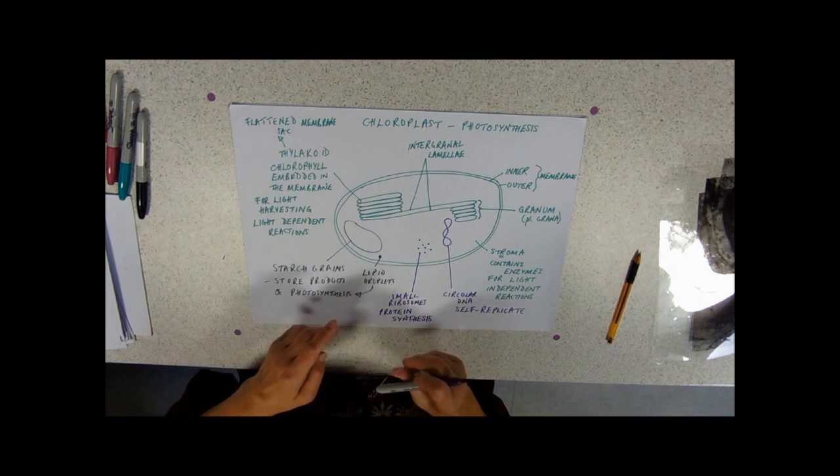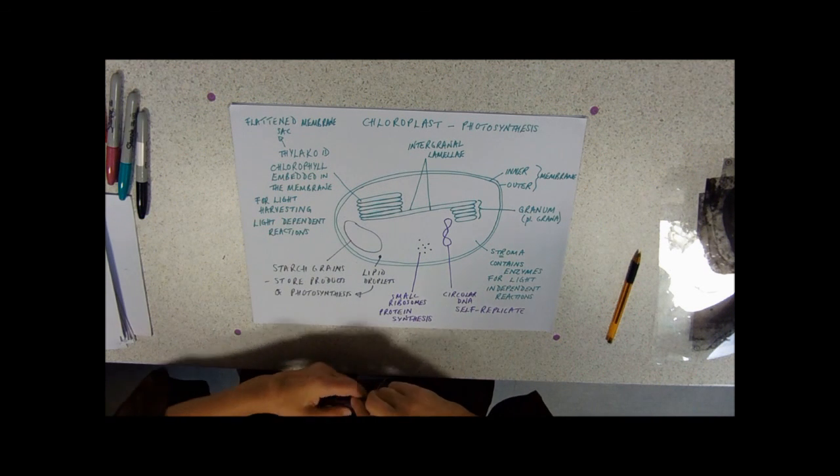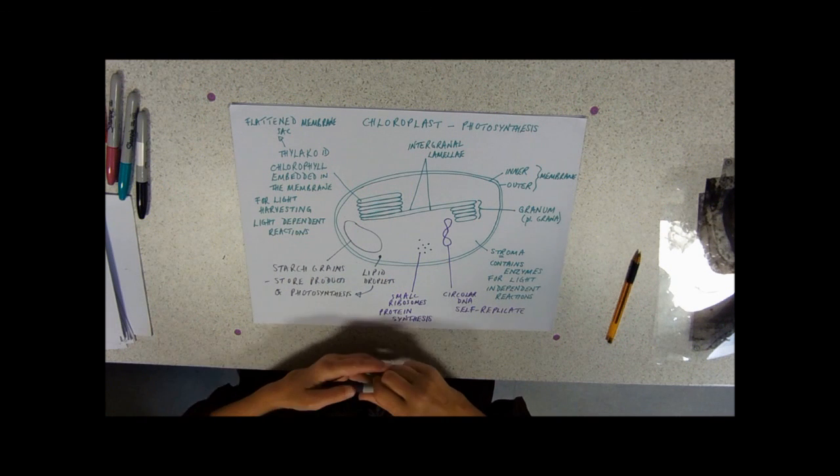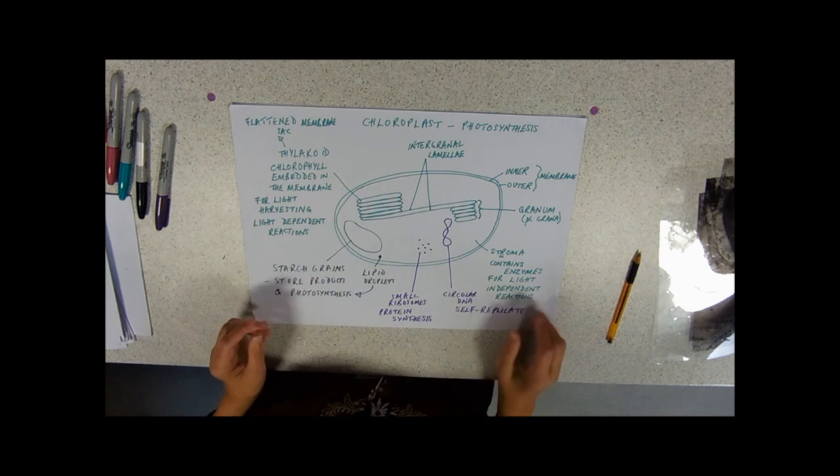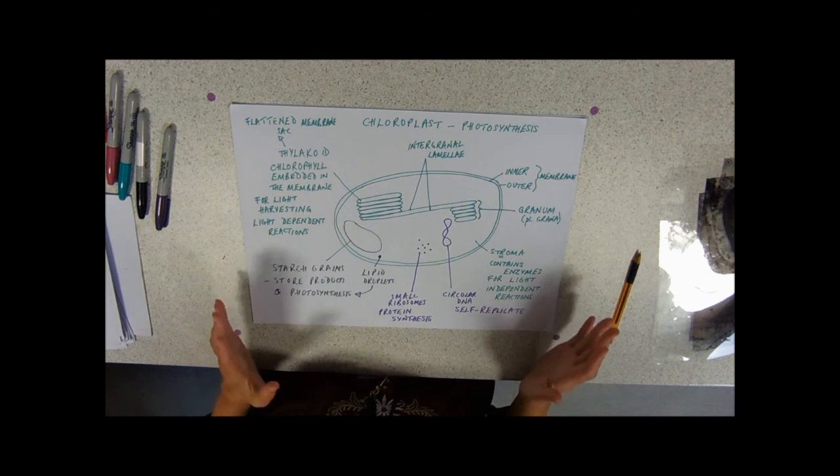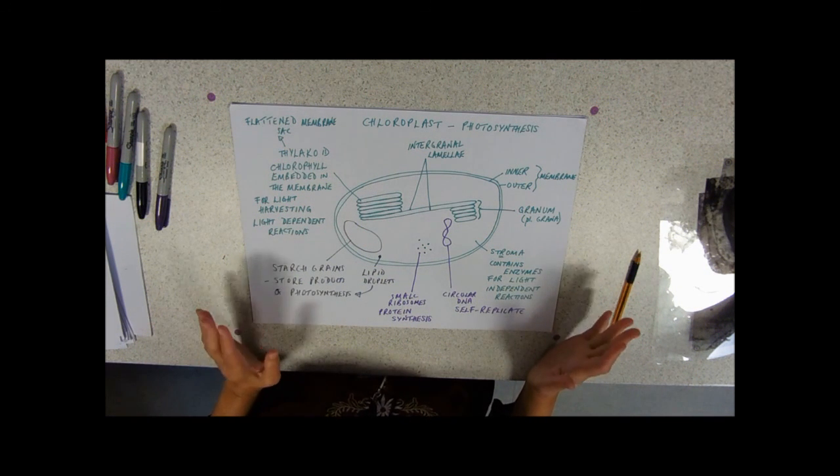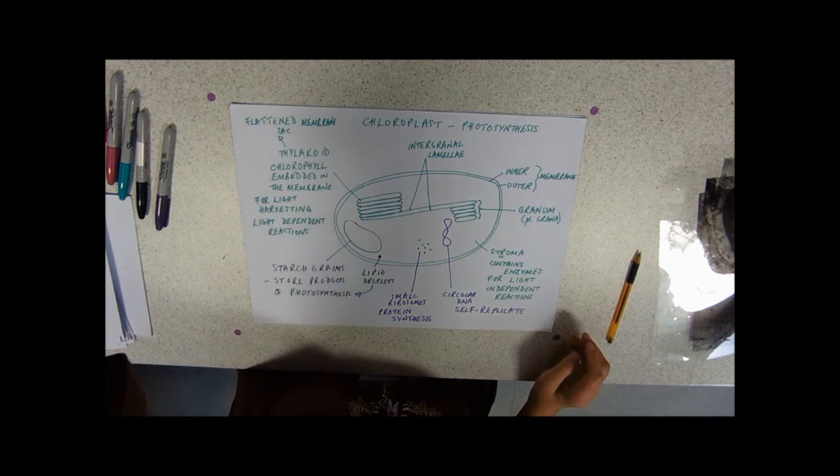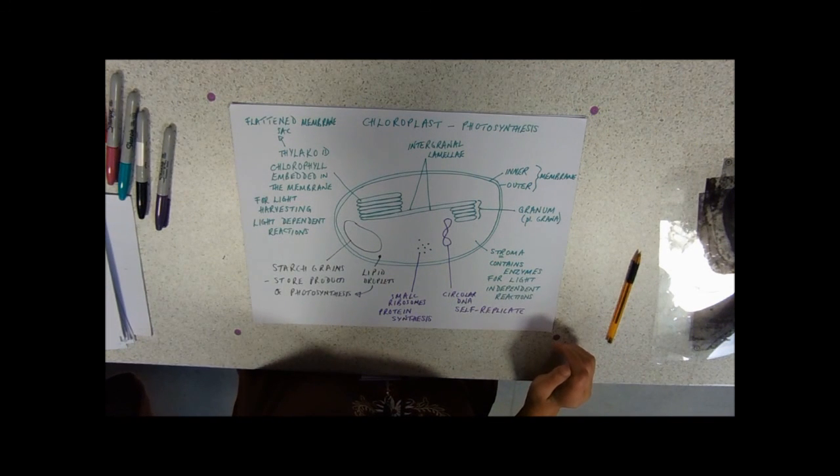So the double-membraned organelles, I think, are probably the ones that are most frequently asked about. They're certainly the most obvious on diagrams of cells and on electron micrographs. So you should really commit those to memory. How you'd go about that, I suggest, is like this.